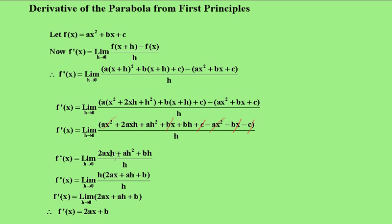And the next line, what I've done, I've taken out h. This h here is a common factor. There it goes there. Because now you can cancel the h's. And you simply get the limit of 2ax plus ah plus b.